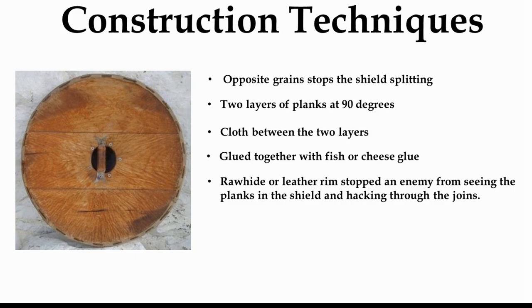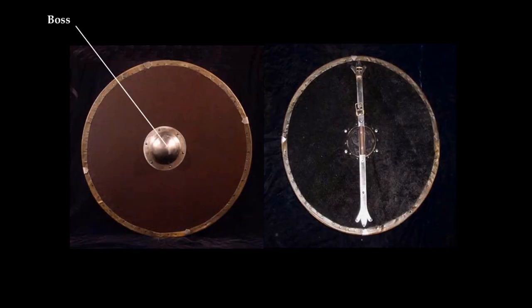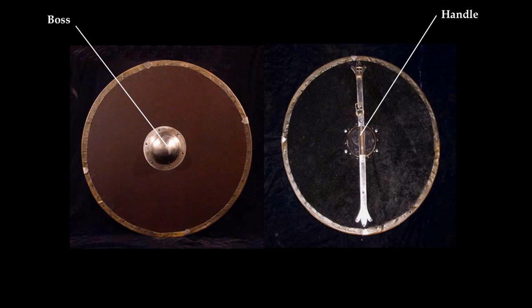After constructing the shield, you would generally put an iron shield boss in the center. The center is generally the weakest point when the shield is struck, so the boss makes it harder to hit — there's this big boss in the way — and it deflects blows away from the center so that enemy weapons glance off and leave you free to attack. Another reason for the shield boss is that it's a good place to put the handle on the reverse side. These handles either extended the full length of the shield or were very short, depending on the style and how force was distributed when struck.